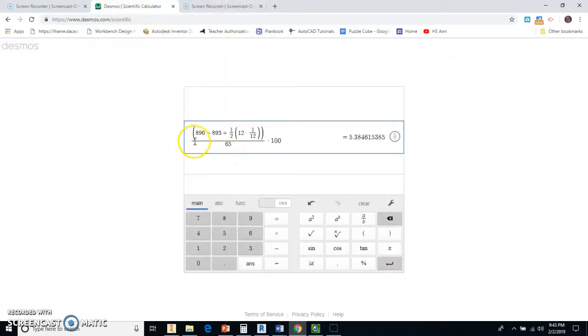Here we go, this is the formula: 896 minus 893 plus one half of the 12 inch times 1 over 12 for converting from inches to feet, divided by 65 times 100.